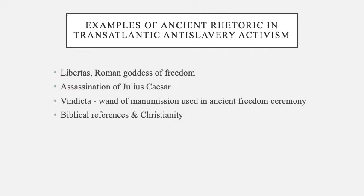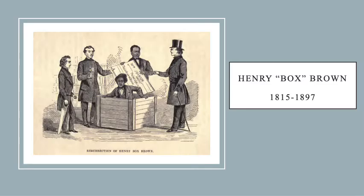While some used ancient ideology to support racism and enslavement, others used it to fight that very racism. In the 1700s and 1800s, there are many ancient Mediterranean references in the freedom narratives of black people who were formerly enslaved — for example, discussions of the Roman goddess of freedom Libertas, mentions of the assassination of Caesar, the vindicta, a wand used in the ceremony of freedom, as well as Christian references. Themes include escape, overcoming oppression, and divine intervention to gain freedom.